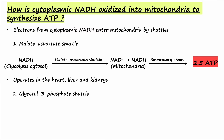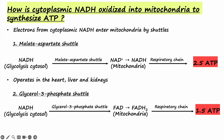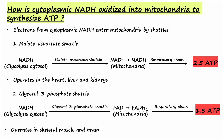The second shuttle is the glycerol-3-phosphate shuttle, which is the focus of today's discussion. In the glycerol-3-phosphate shuttle, electrons from NADH are transferred to FAD in the mitochondria. FAD is then reduced to FADH2, and FADH2 then gives up electrons to the respiratory chain to synthesize 1.5 molecules of ATP. The glycerol-3-phosphate shuttle operates heavily in skeletal muscle and brain.